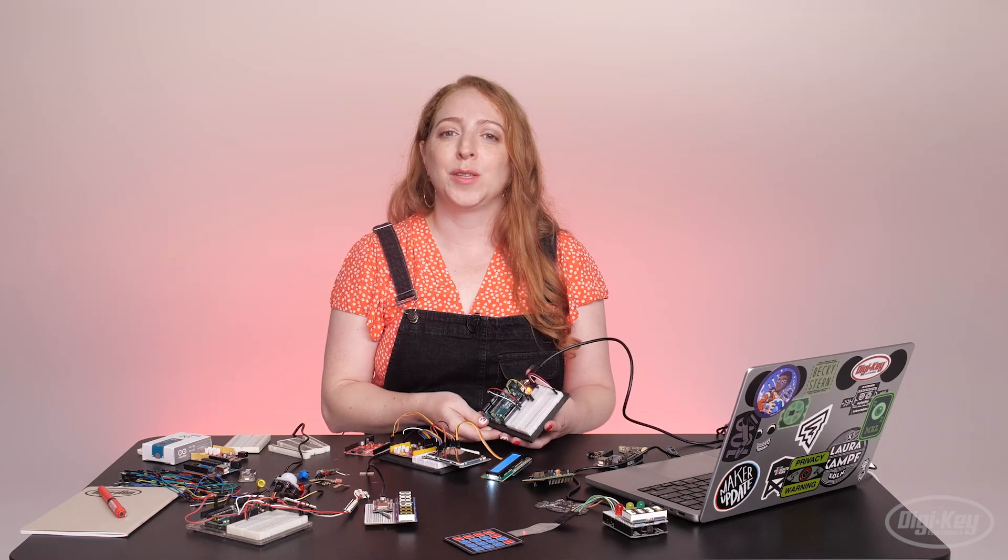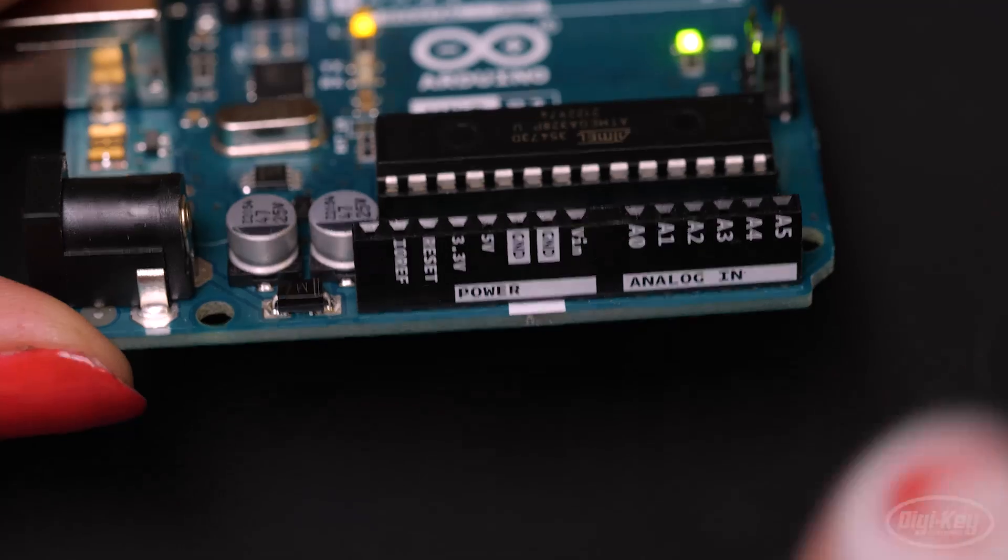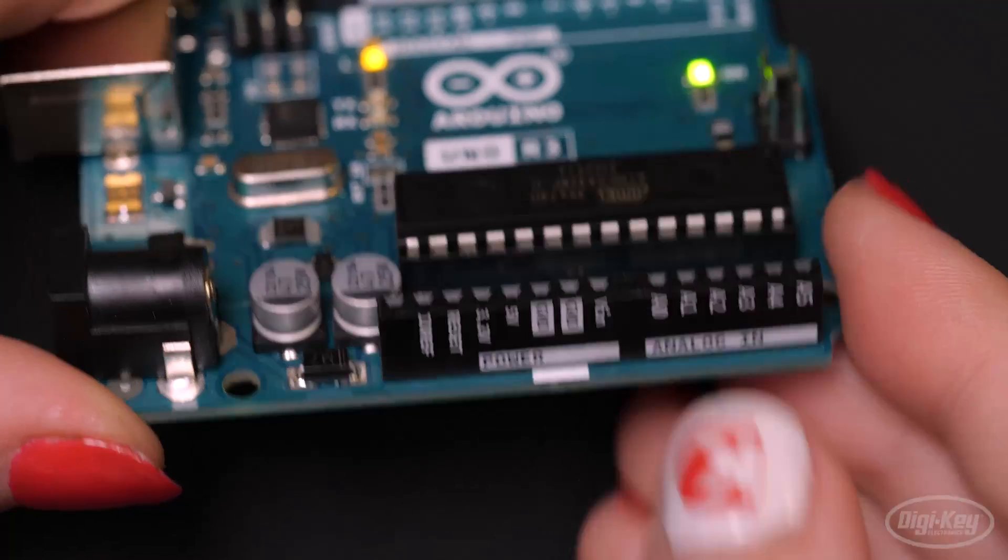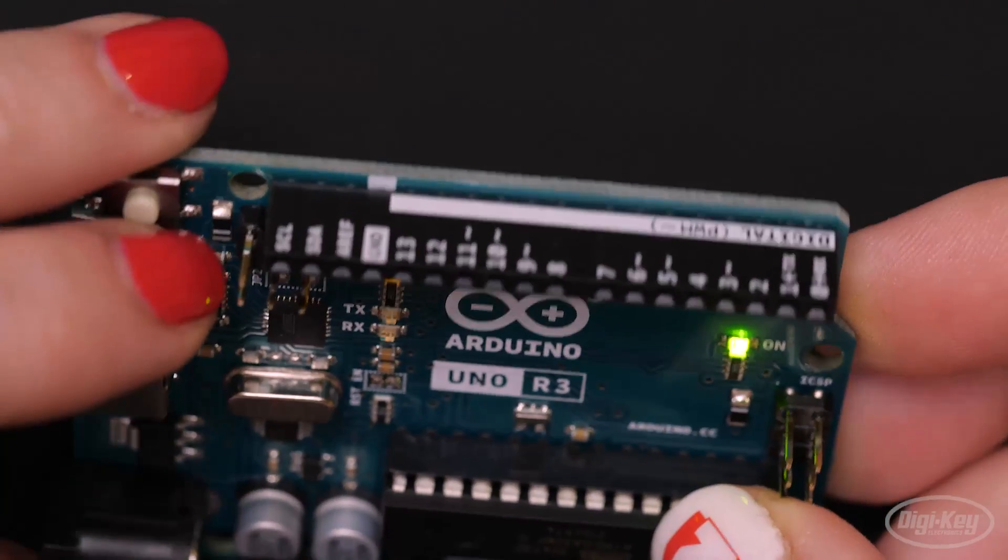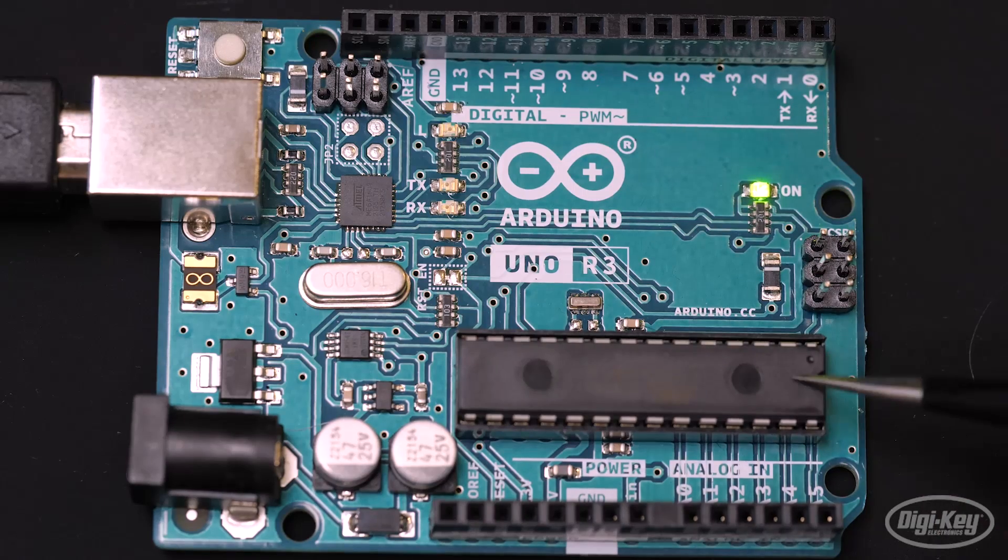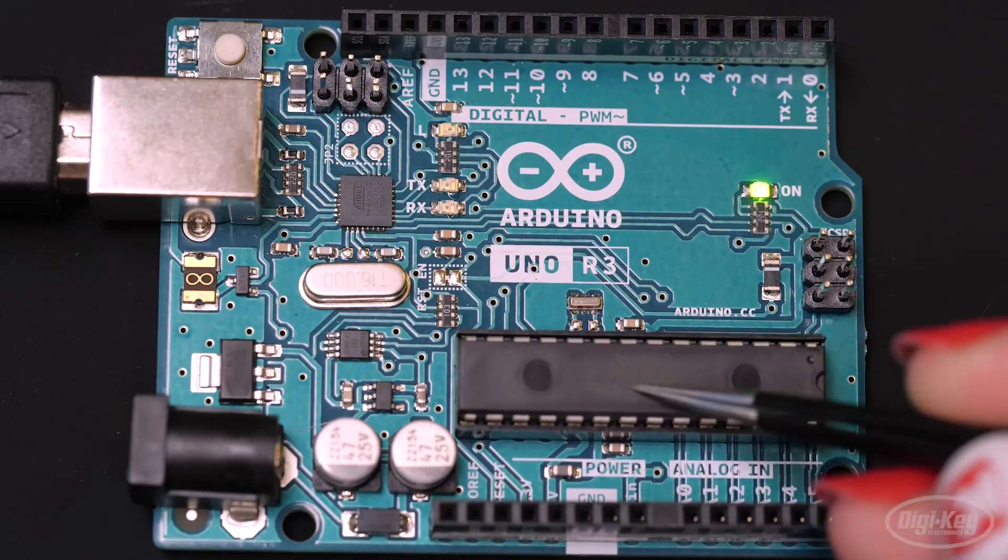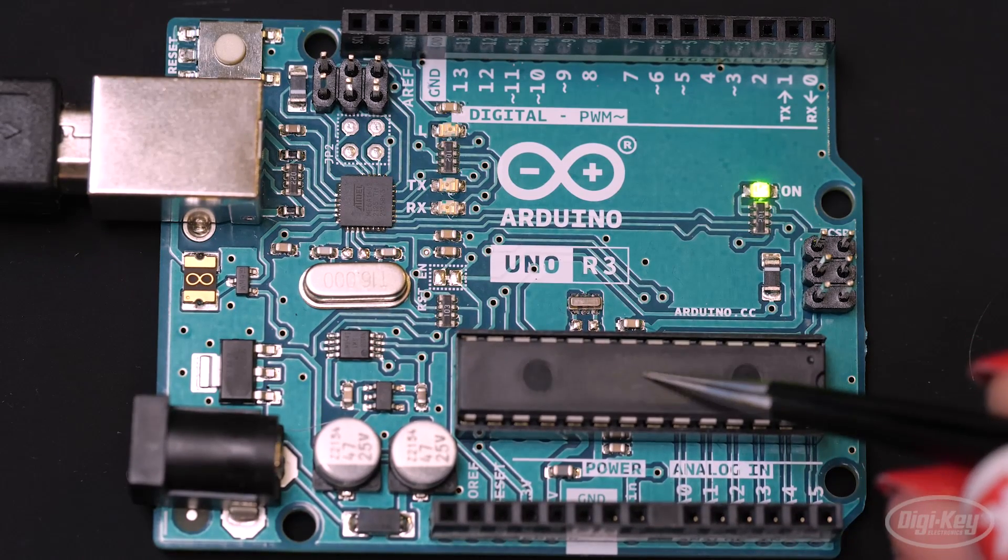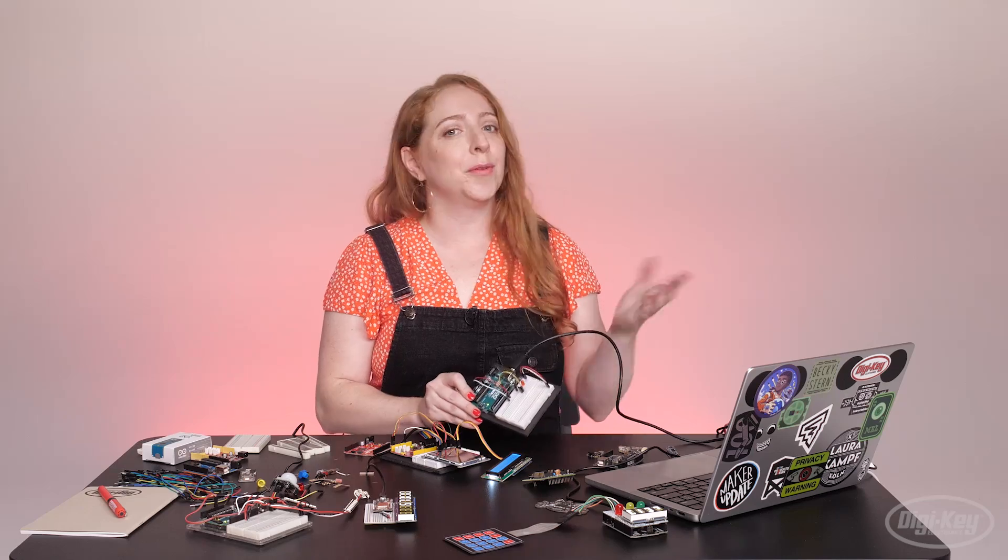These beginner-focused boards have large labels to help you see what you're plugging into the header pins along the edges, which connects to various pins on the microcontroller chip itself, which is a tiny computer running a program that we upload to it from the regular computer.